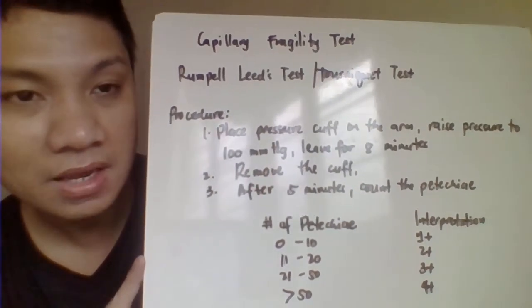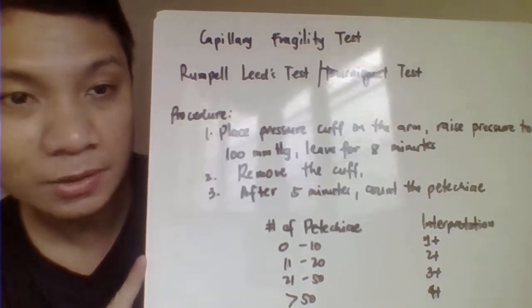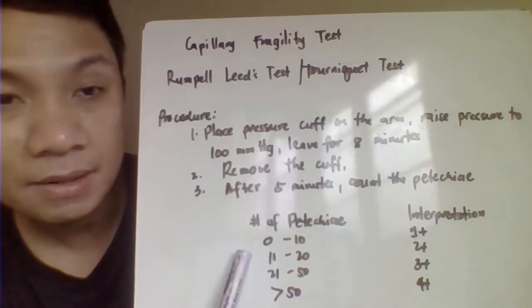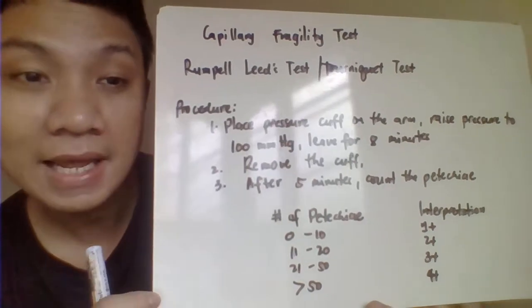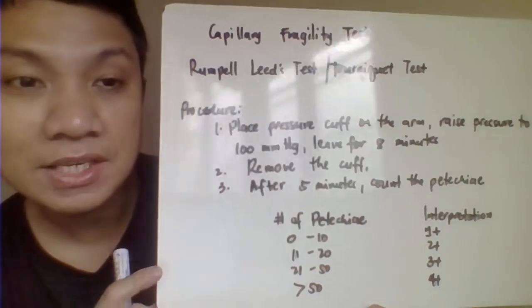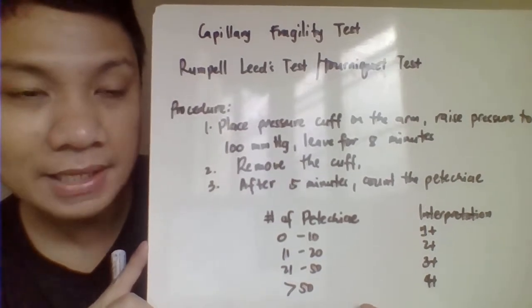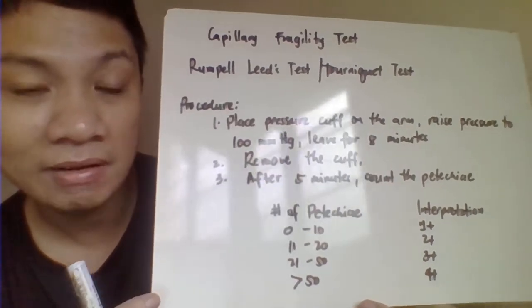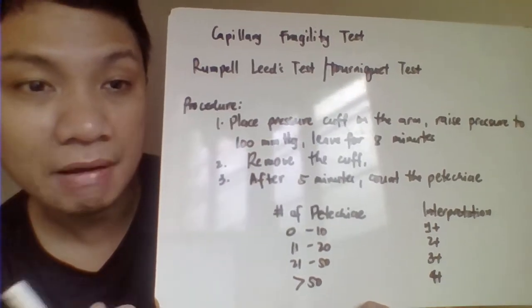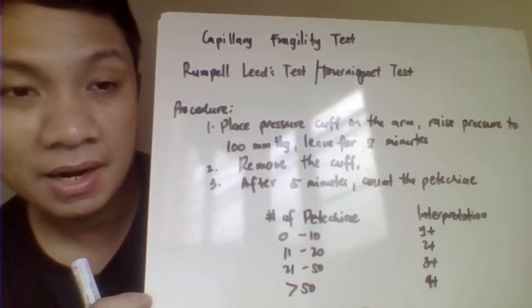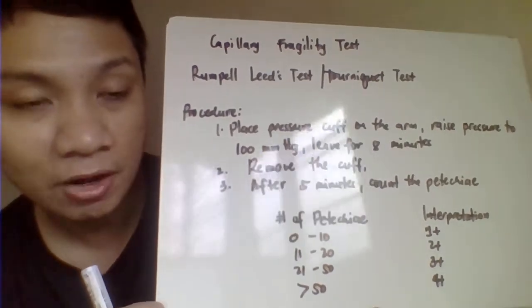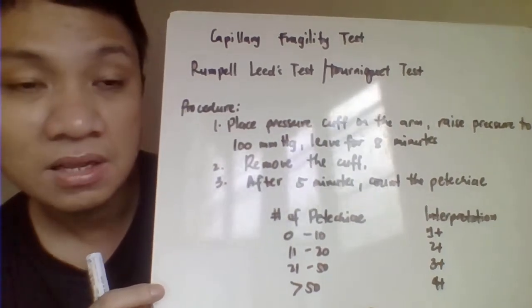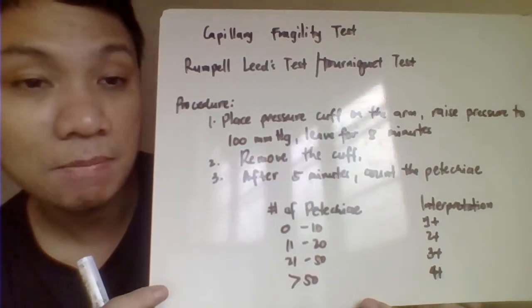This test can also be correlated with the degree of thrombocytopenia, as it is correlated with the number of petechiae and the platelet counts. Traditional physicians tend to correlate the presence of petechiae — like when applying a tourniquet — with a decrease in platelet count. They assumed that many petechiae produced after tourniquet application meant a decreased platelet count. But currently, it's not really accurate in terms of interpretation as related to thrombocytopenia or platelet counts.